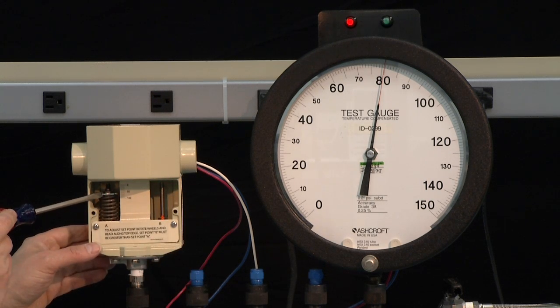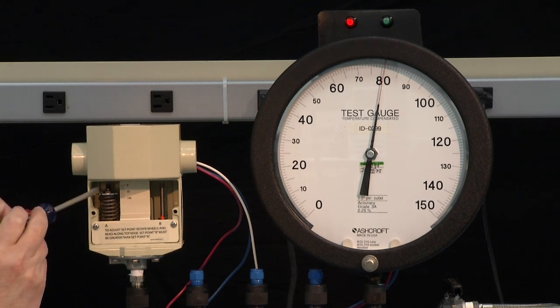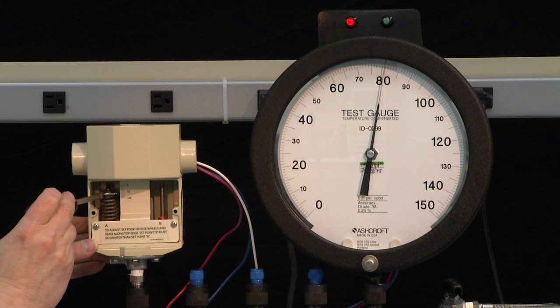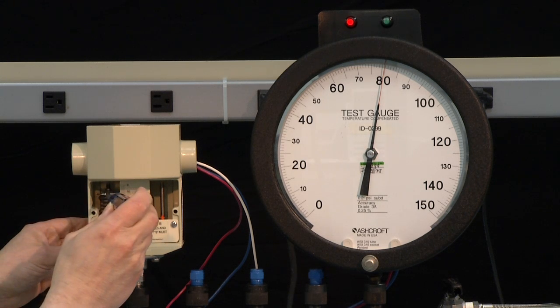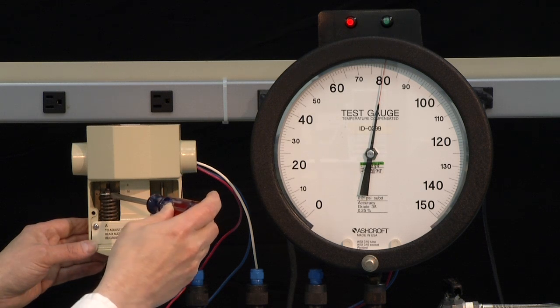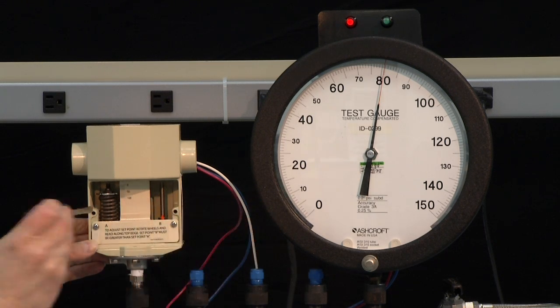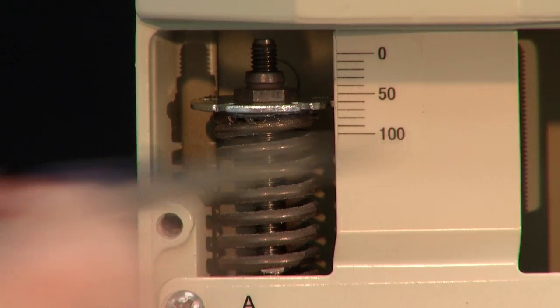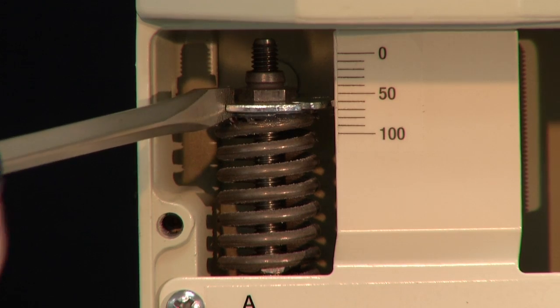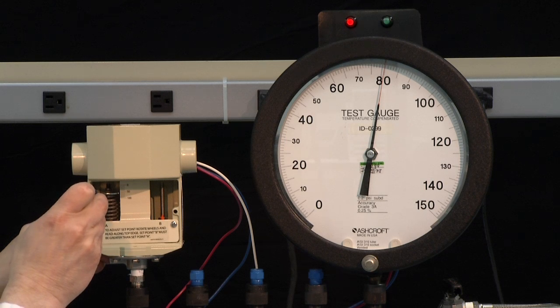Now the switch just reset. So that means my set point is above the desired set point of 80, and I am going to turn back counter-clockwise until the switch turns on. Going slowly until it just turns on.